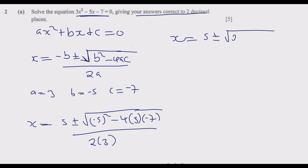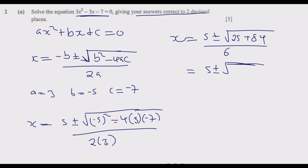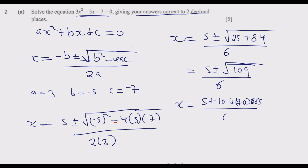Negative 5 squared equals 25. Then 4 times 3 is 12, times negative 7 gives negative 84. The double negative becomes positive, so we end up with positive 84. The denominator is 2 times 3 which is 6. So we have 5 plus or minus the square root of 25 plus 84, which equals the square root of 109, all over 6.